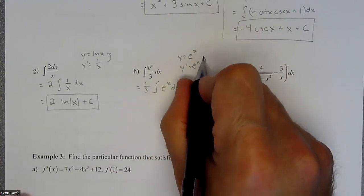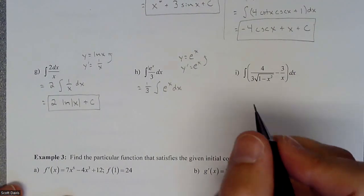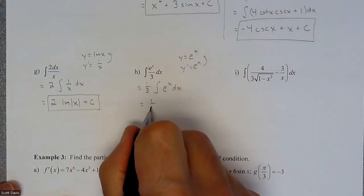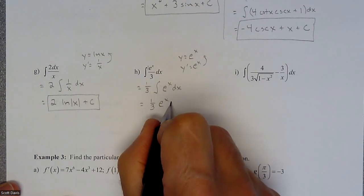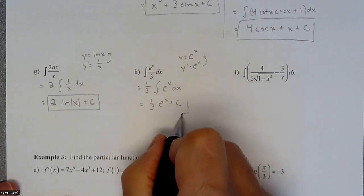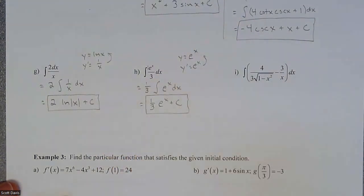So then if we're going backwards, doing the antiderivative, we would just get the original all back again. And then plus c.